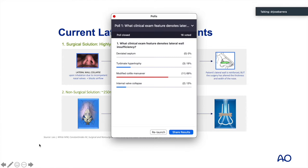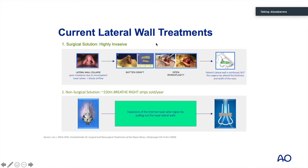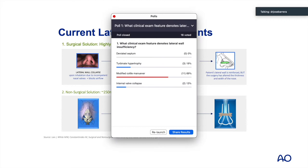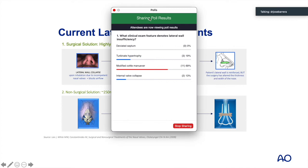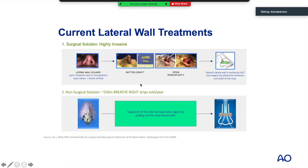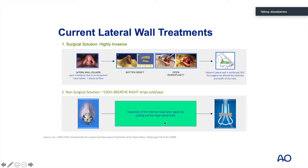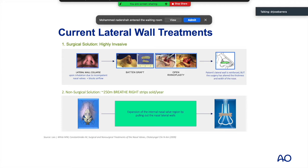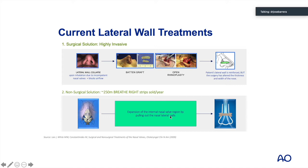There are many lateral wall techniques we can utilize — both surgical and non-surgical. Common surgical techniques include alar batten grafting, lateral crural strut grafting, bone anchor suture technique, and alar turn-in flap. On the non-surgical side, the breathe right strip is very popular — 250 million are sold each year. When patients tell you they use a breathe right strip, they are essentially letting you know that they have lateral wall insufficiency.